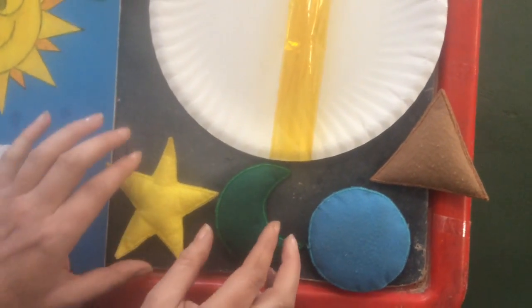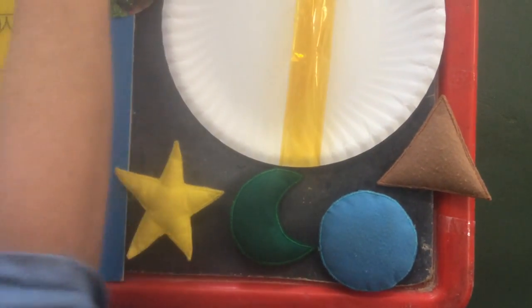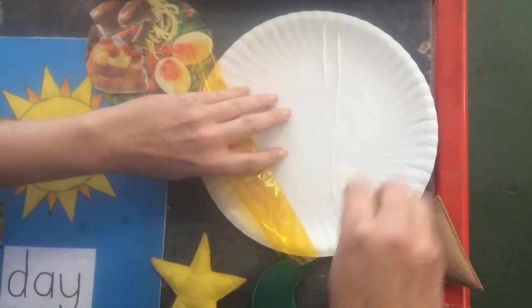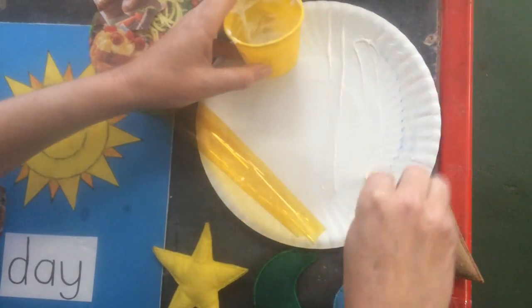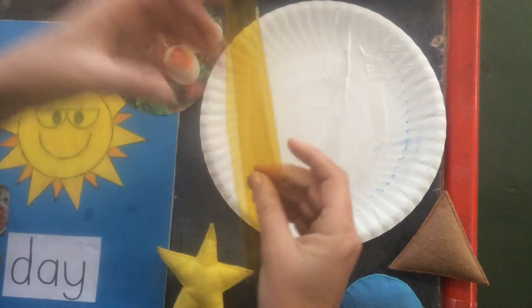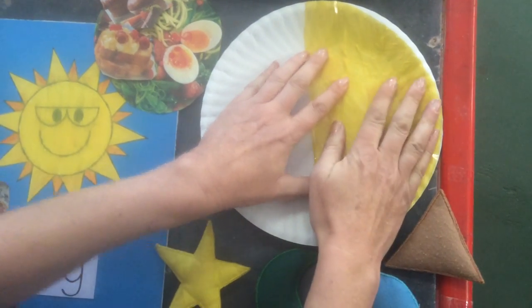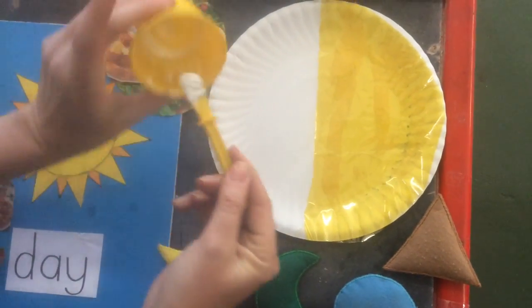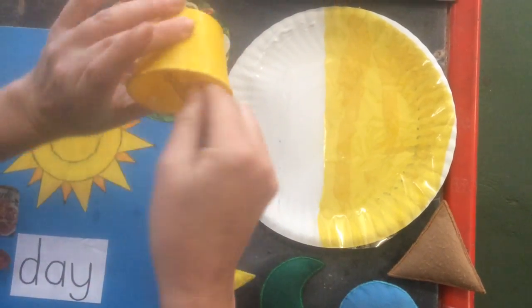So I've cut out half the plate is going to be day and half of it is going to be night. So I've cut out yellow for the day, and I'm going to stick that on that half of the plate, and then dark night on this side.